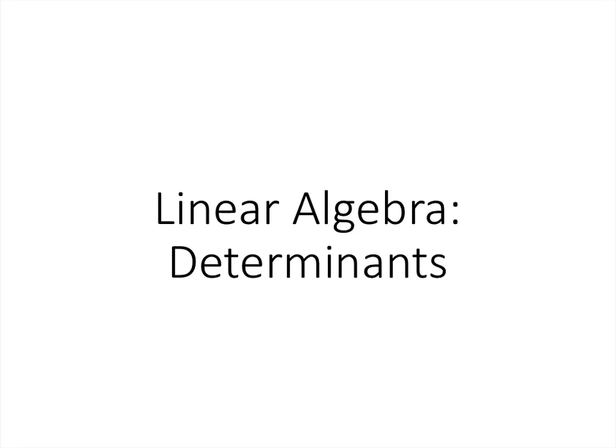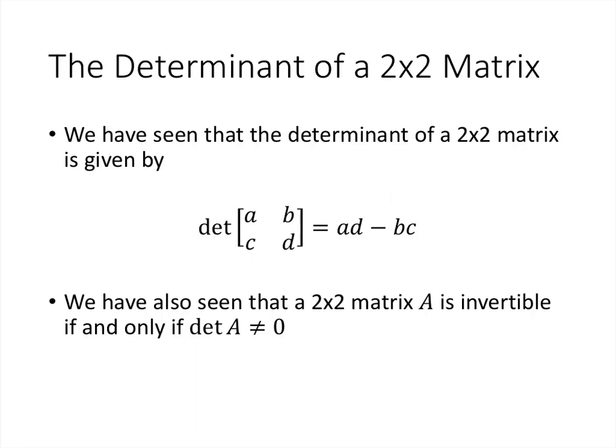In this lecture, we'll talk about determinants. We've already talked about the determinant of a 2x2 matrix. When we have a matrix whose rows are AB and CD, the determinant of that matrix is AD minus BC. The matrix ABCD is invertible if and only if that determinant is not 0. So the determinant tells us whether the matrix is invertible: if the determinant is 0 the matrix is not invertible, and if it isn't 0 the matrix is invertible.